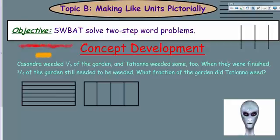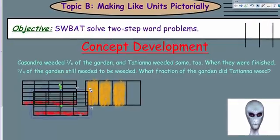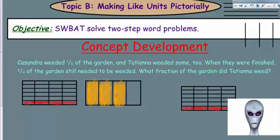This shaded amount indicates what still needed to be weeded, and the one-sixth shows the amount Cassandra weeded herself. Tatiana's amount is unknown. We can't work with these units because the denominators aren't like denominators, so we need to make that happen. The easiest way is to turn them into twenty-fourths by putting the model into quarters and sixths, giving us 24 parts.